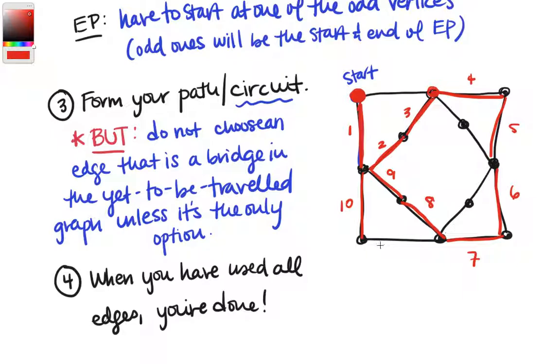And I should note, on edges nine and 10, those were bridges, but they were the only option. And similarly, we see this edge here that we're about to take. It's a bridge in the yet to be traveled part of the graph. If we remove it, then we'll have this vertex and all these other edges, but it's the only option. So we can go ahead and take it.